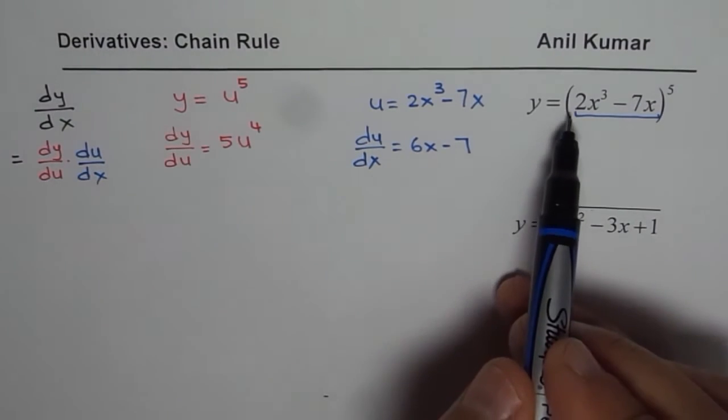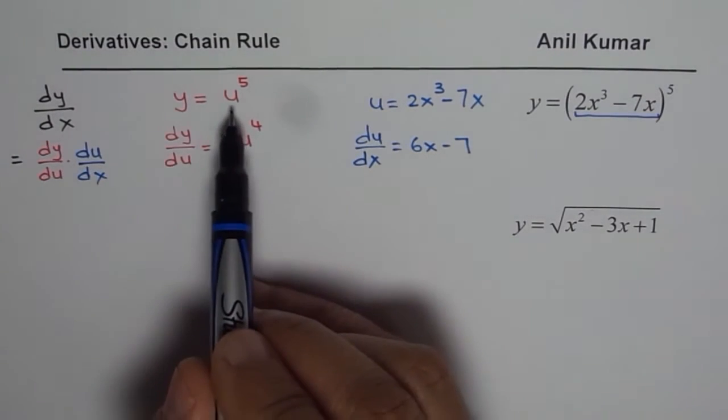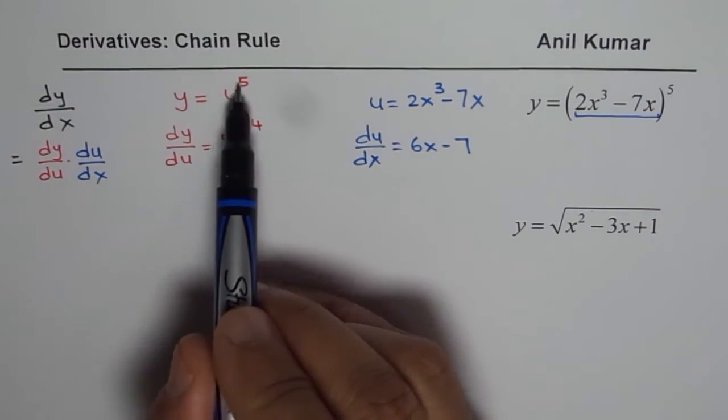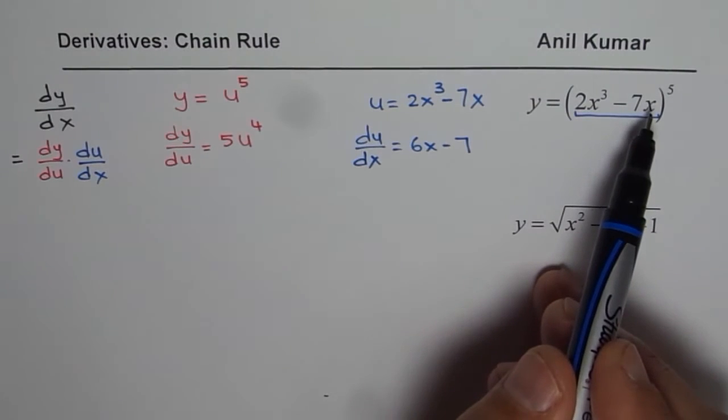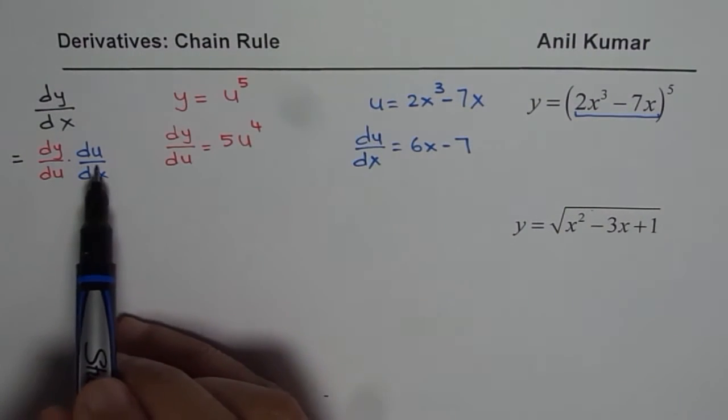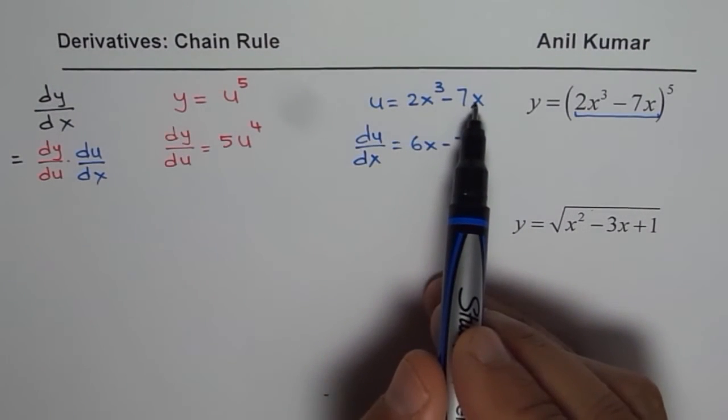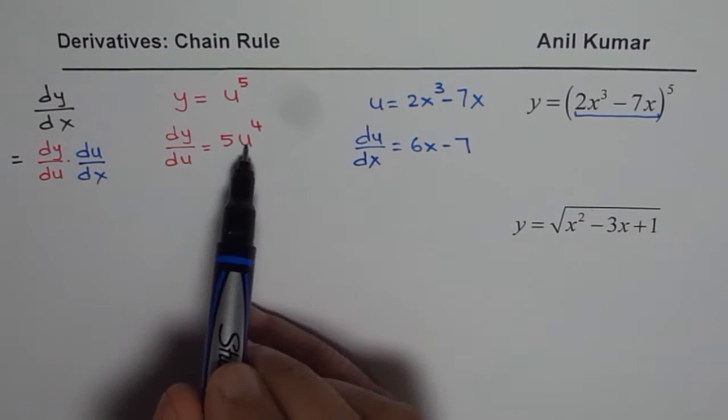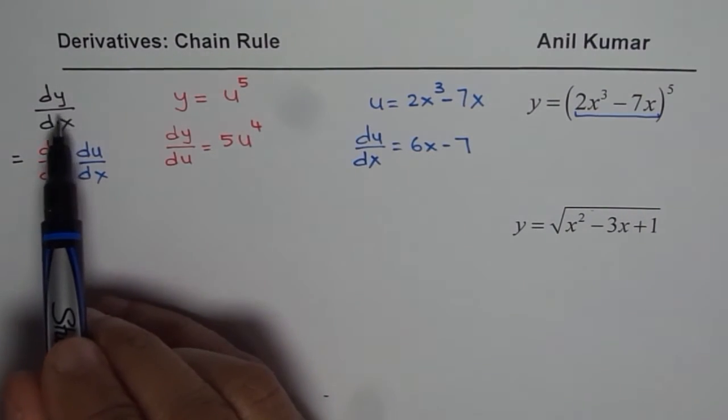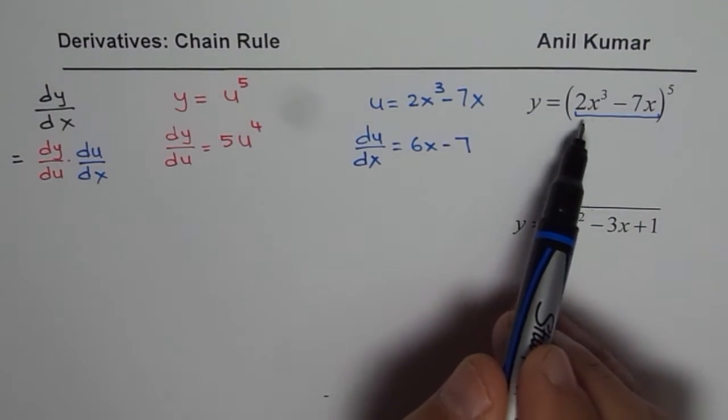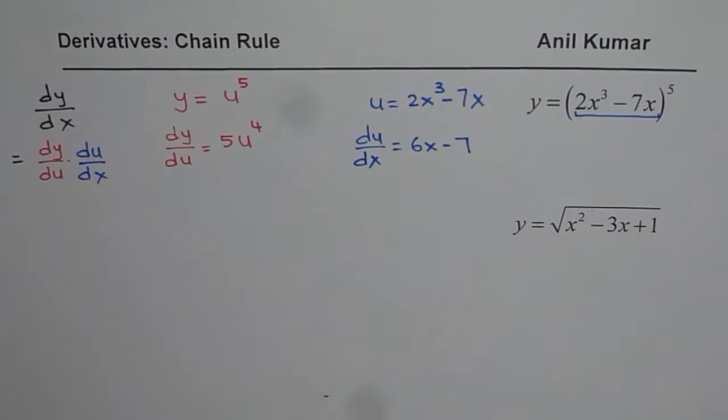Derivative of the outside function, which is y equals to u⁵ in this particular case, times the derivative of inside function, which is 2x³ - 7x. When you have product of these two, you get derivative of y with respect to the whole function. Do you get the idea? That is the rule and that is how it can be applied.